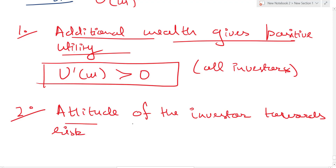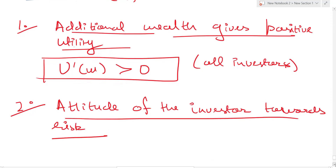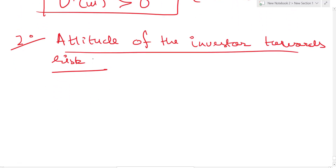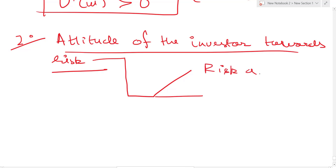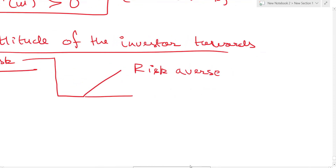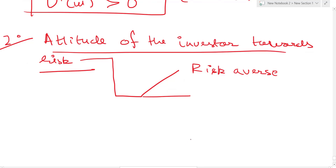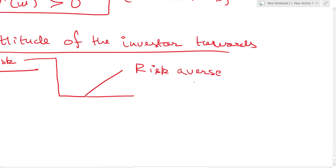The second idea is the attitude of the investor towards risk. Here we categorize investors into three categories. The first one is called a risk averse investor. As the name suggests, this is a person who doesn't like risk and is averse to risk. He would not want any additional risk unless it gives him a lot of extra money. The second kind of person is risk seeking, or risk loving.